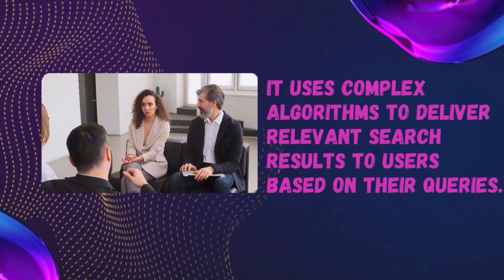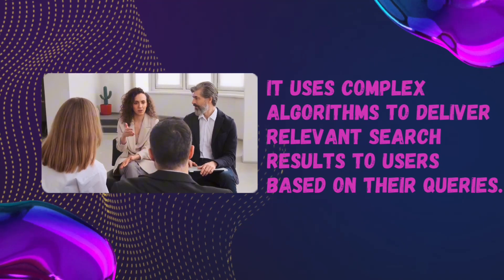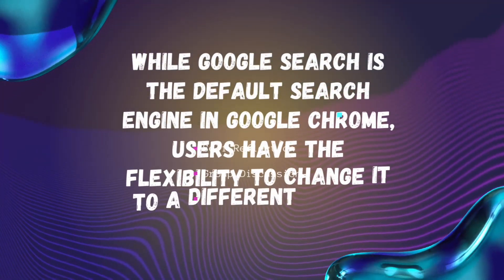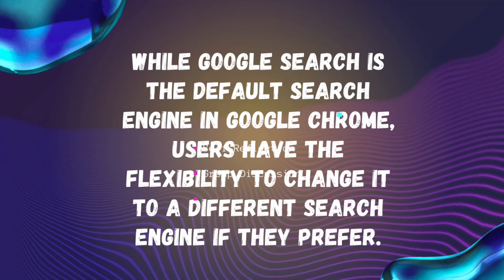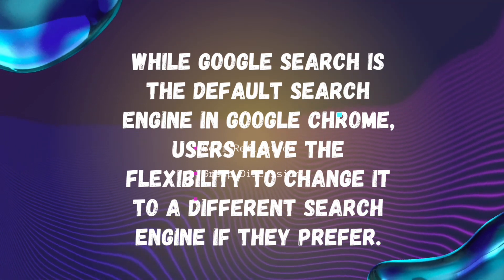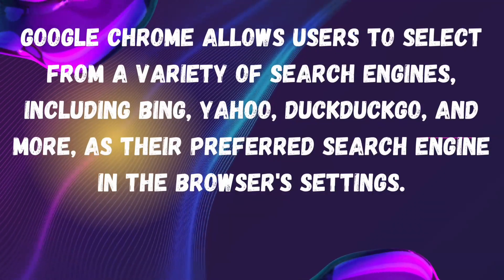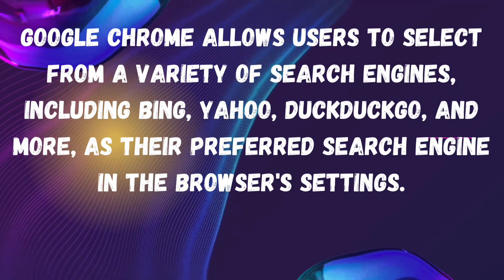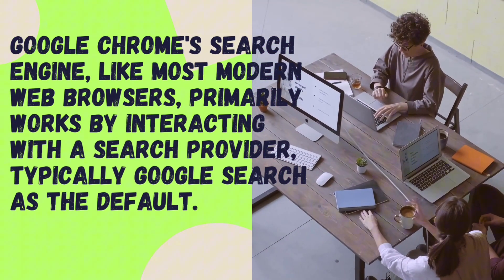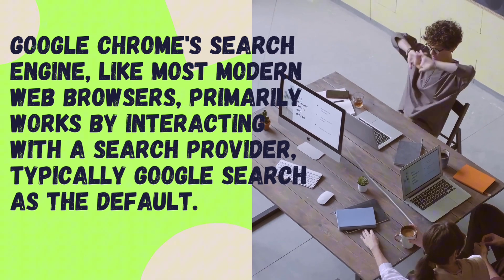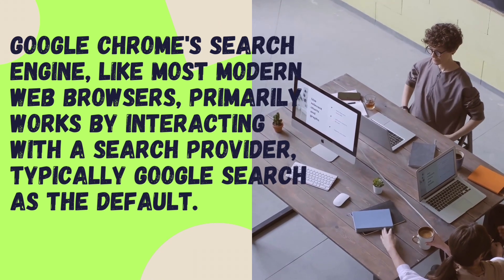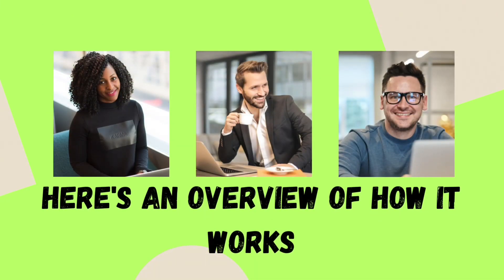It uses complex algorithms to deliver relevant search results to users based on their query. While Google Search is the default search engine in Google Chrome, users have the flexibility to change it to a different search engine if they prefer. Google Chrome allows users to select from a variety of search engines including Bing, Yahoo, DuckDuckGo, and more as their preferred search engine in the browser settings. Here is an overview of how it works.